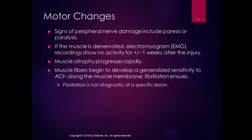Motor changes from peripheral nerve damage in a motor nerve include paresis or paralysis. If the muscle is denervated, EMG recordings show no activity for about a week after injury. When there's no electrical response in the muscle, the muscle fibers develop a generalized sensitivity to acetylcholine along the membrane — that's where you get fibrillation. Fibrillation is diagnostic of an innervation problem but not of any specific lesion.